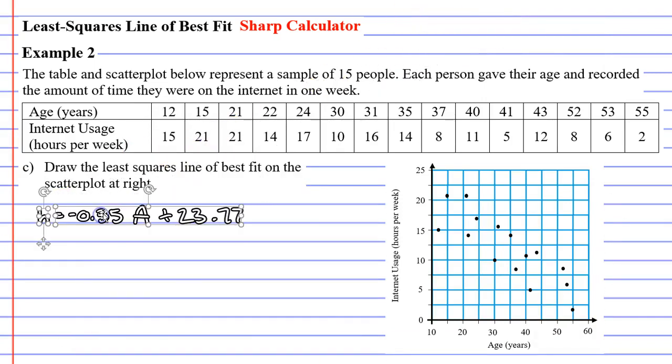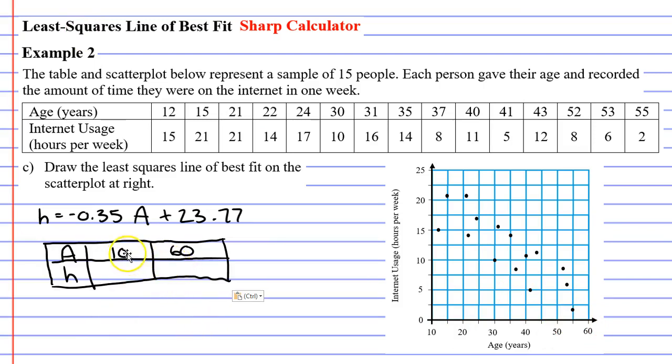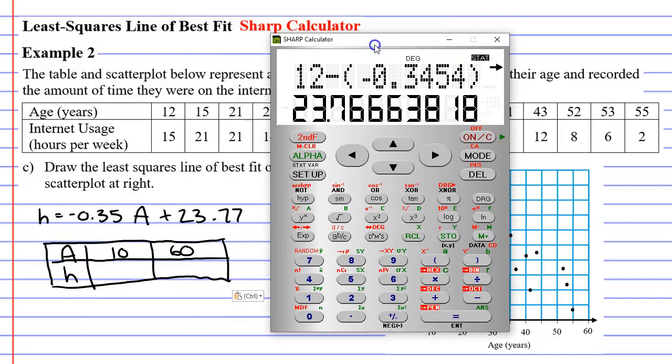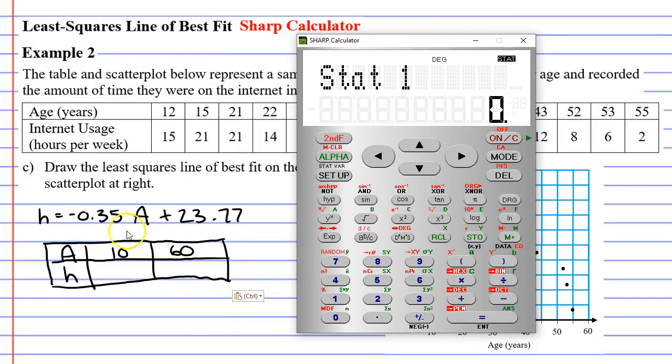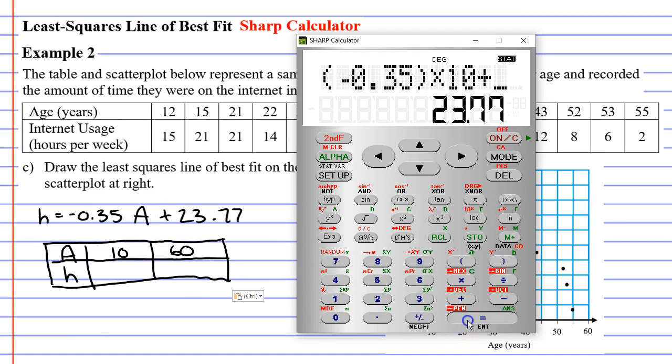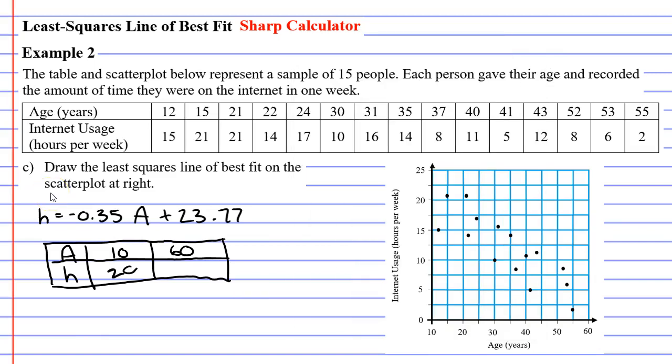We're going to draw the least squares line of best fit on the scatter plot. To do this, we just need two points, and the further apart the points, the better. So I'm going to do one point for a 10-year-old and a point for a 60-year-old. I'm going to draw up a table of values with those two points, the 10 and the 60. I'm not going to show all the working. I'm just going to plug them right into the calculator. So I'll start with negative 0.35, so negative 0.35. I'm going to multiply this by a, which in this case is 10. And then I'm going to add 23.77. This gives me 20.27. And whenever you're putting something on a scatter plot, you really don't need decimals. So I'm just going to write it as 20.